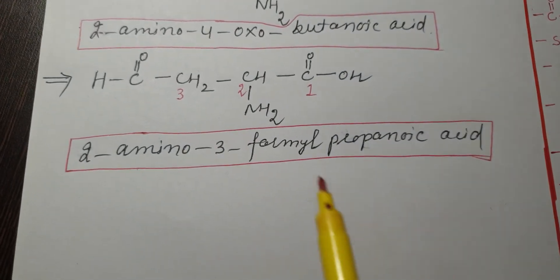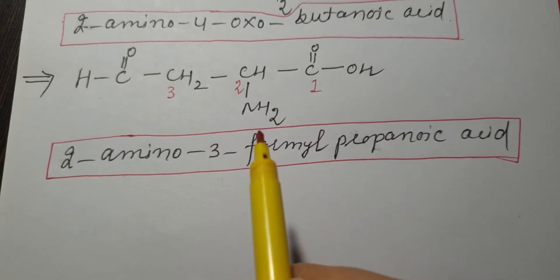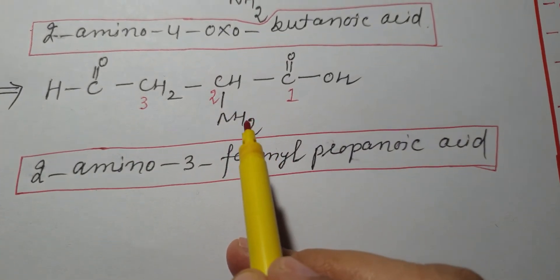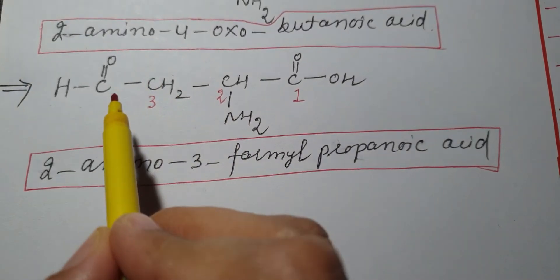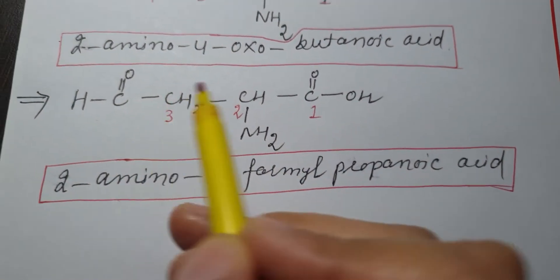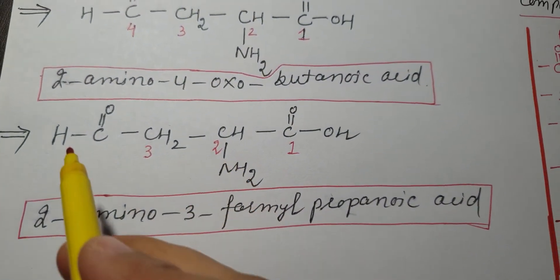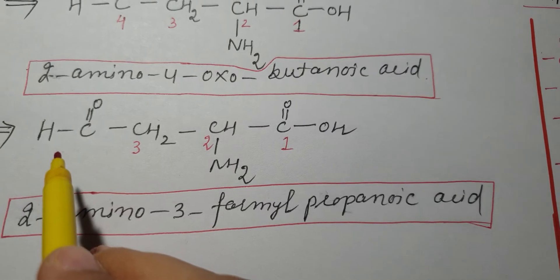If COOH is present, all other functional groups become only substituents. In this case, I am getting two substituents: this is NH2 and the second substituent is CHO. NH2 as a substituent is called amino, and CHO as a substituent is called formyl.